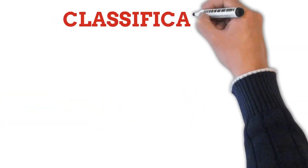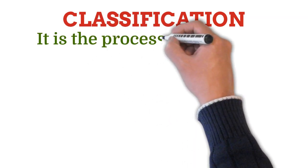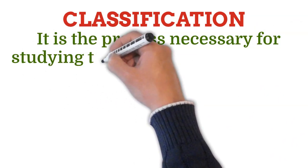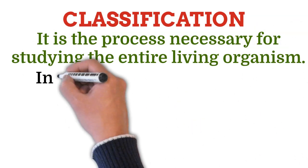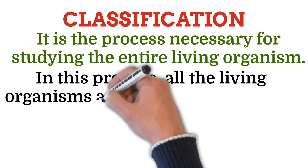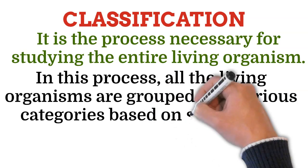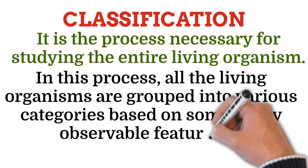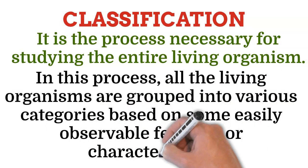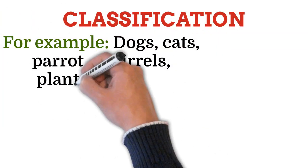Next, the subject of discussion is classification. It is the process necessary for studying the entire living world. In this process, all living organisms are grouped into various categories based on some easily observable features or characteristics. For example, dogs, cats, parrots, squirrels — these are placed into categories like plants, animals, mammals, arthropods, etc.